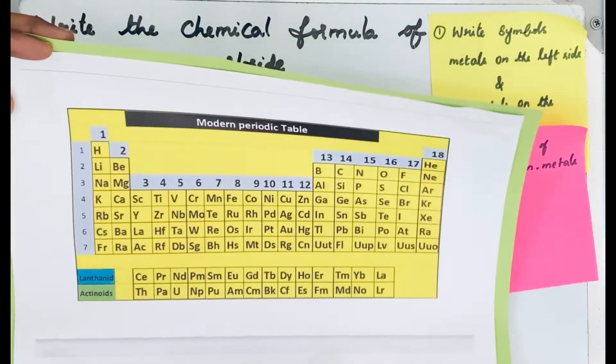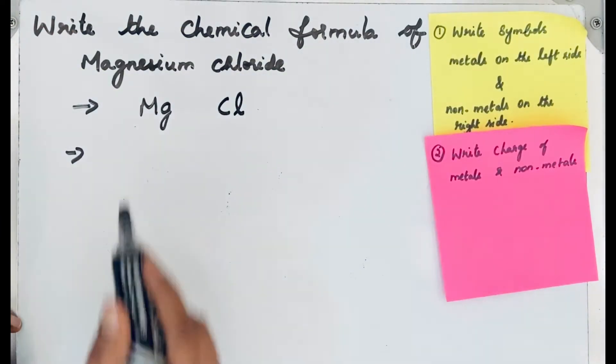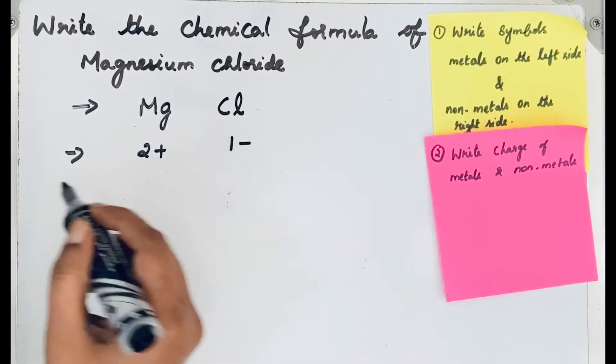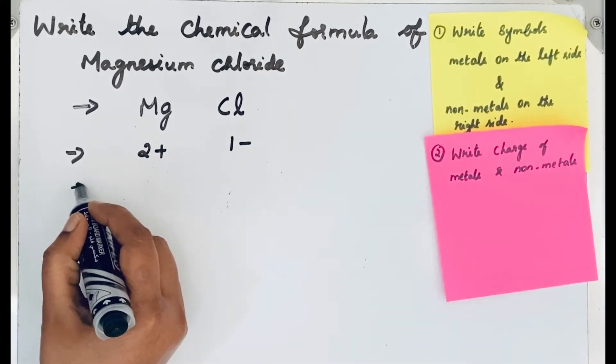Let's write the charge: 2+ and 1-. After writing the charge, now crisscross the charge and verify your answer.